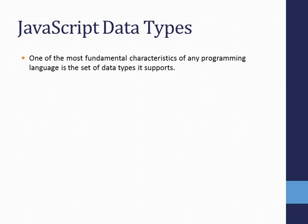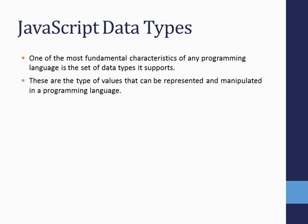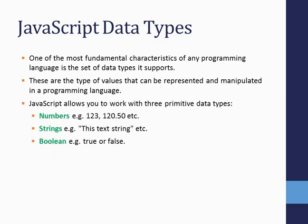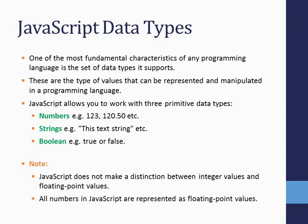These are the fundamental characteristics of any programming language — the types of values that can be represented and manipulated. In JavaScript, it allows you to work with three primitive data types: number, string, and boolean.